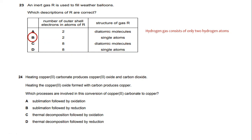Heating copper(II) carbonate produces copper(II) oxide and carbon dioxide. Heating the copper(II) oxide formed with carbon produces copper. Which processes are involved in this conversion of copper(II) carbonate to copper? The answer will be B.